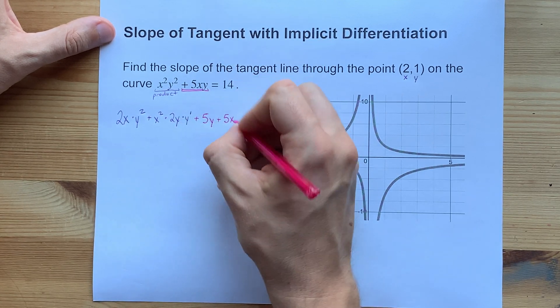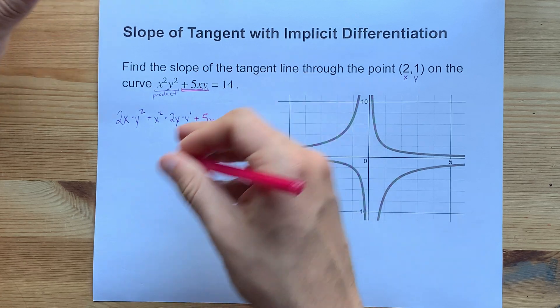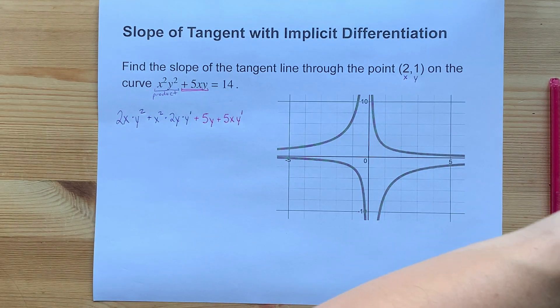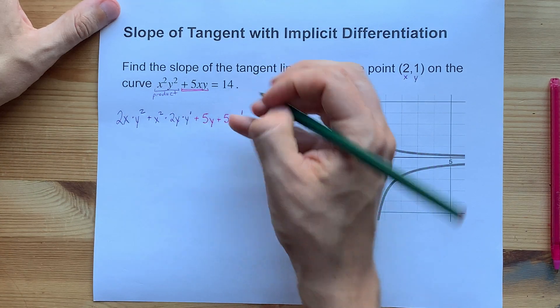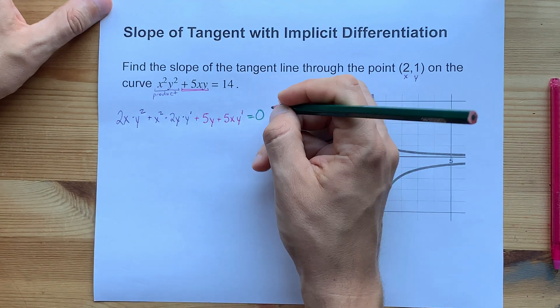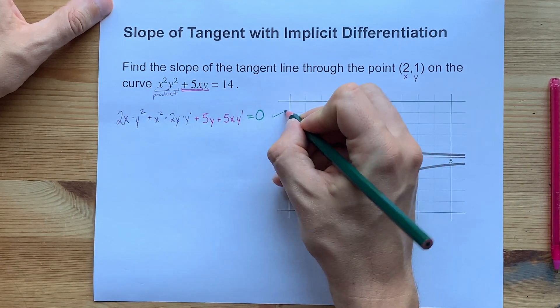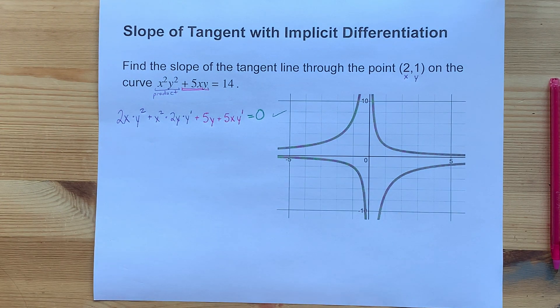The derivative of y is just straight up y prime. Great. And lastly, we have this equals 14. The derivative of 14 is 0. You have now implicitly differentiated the function.